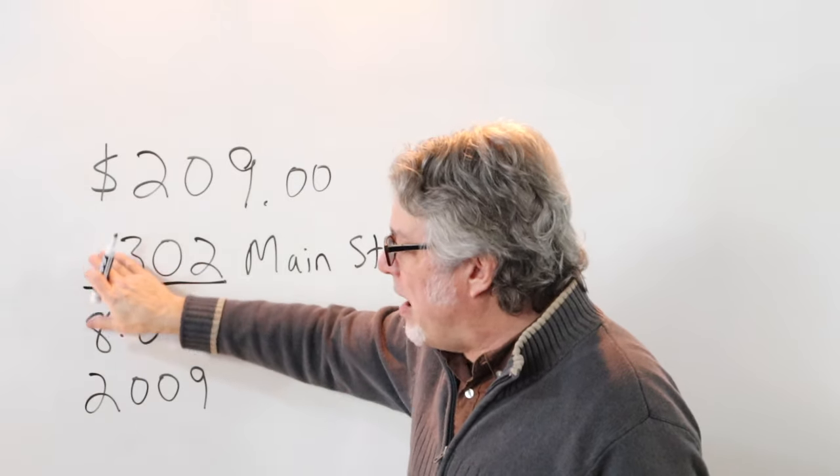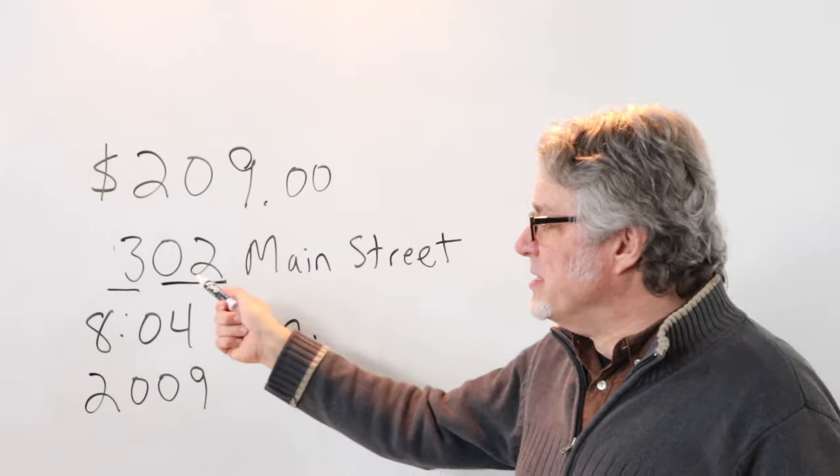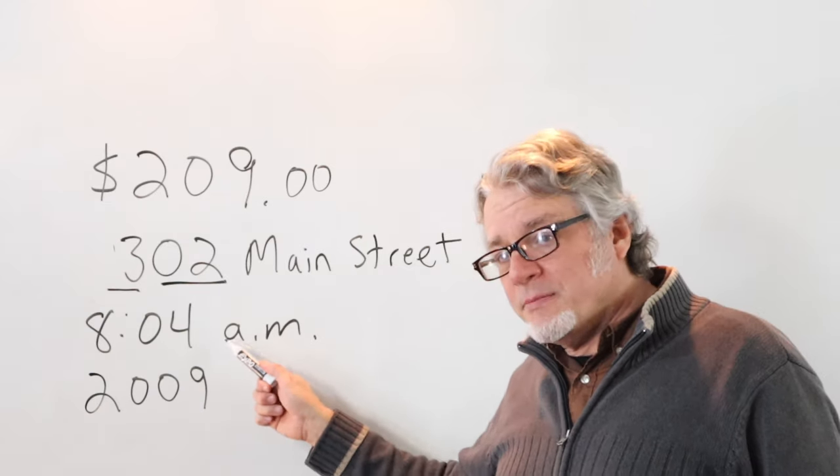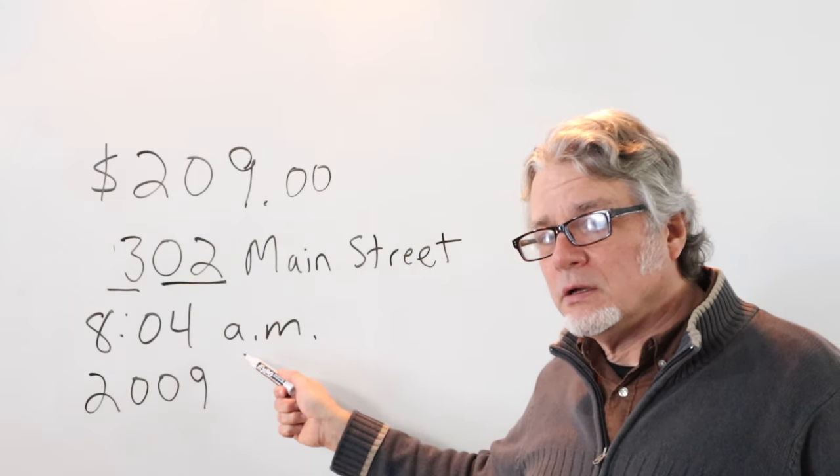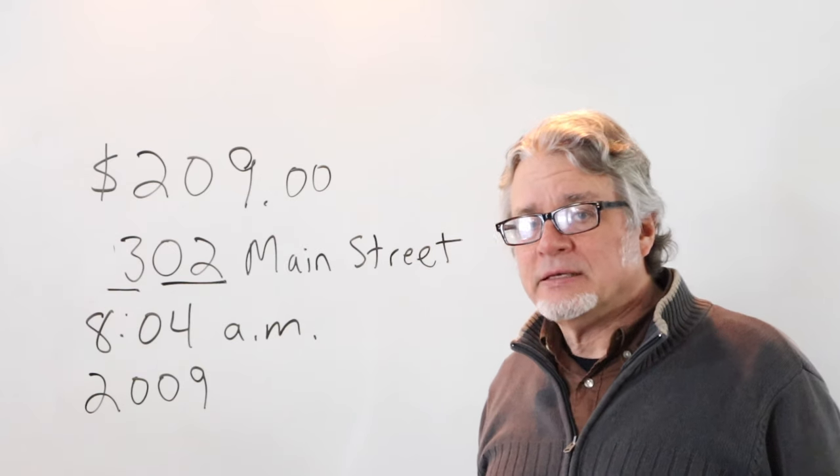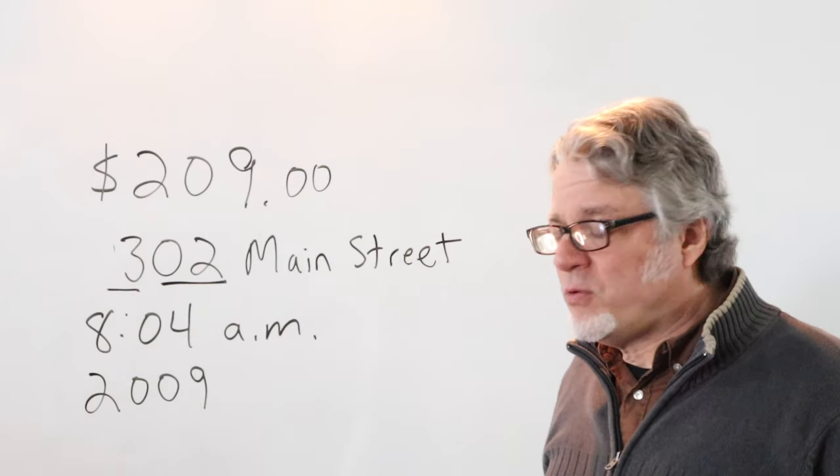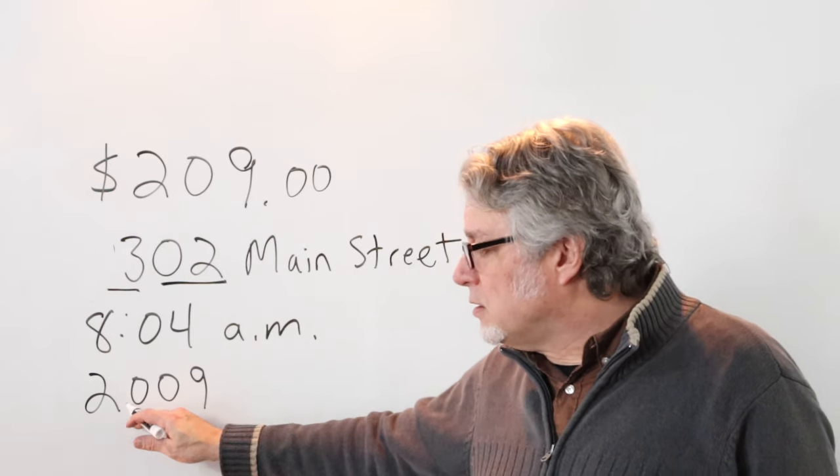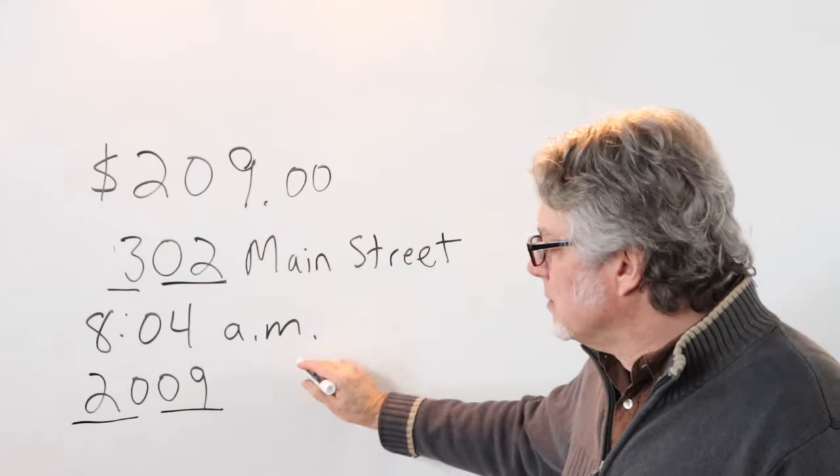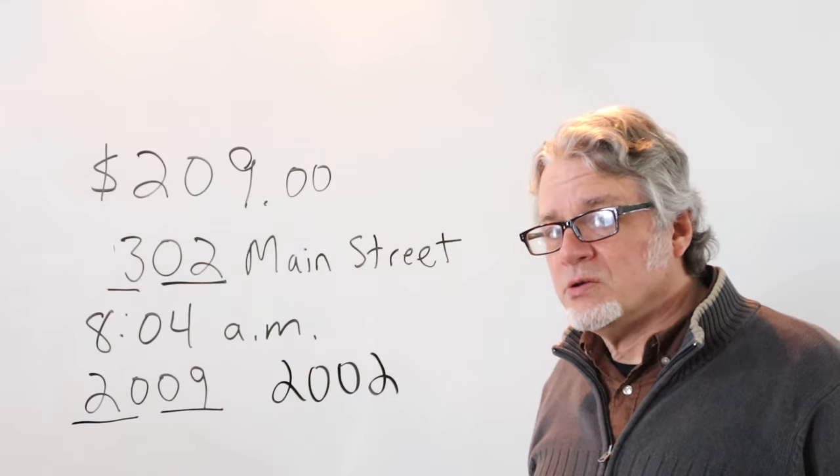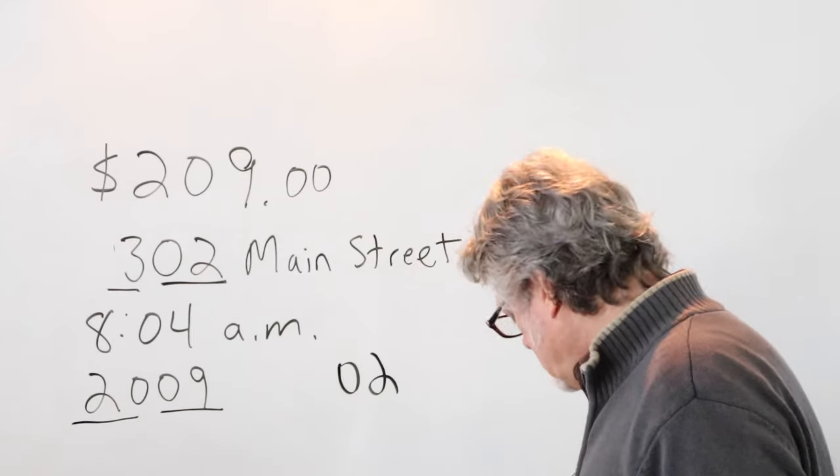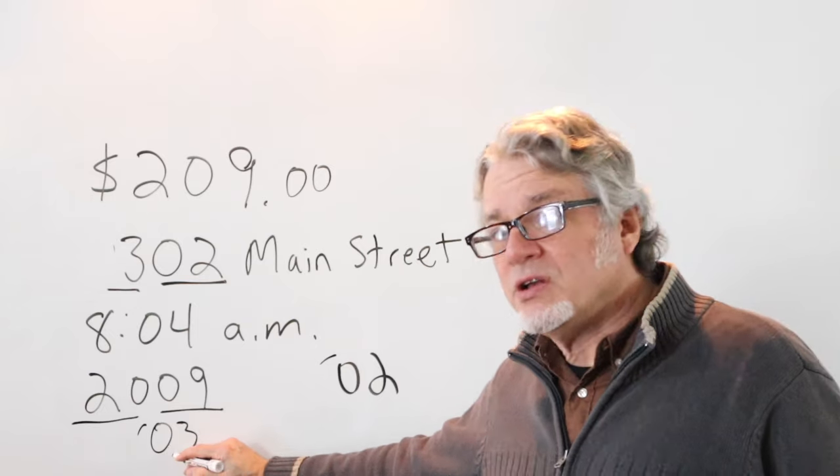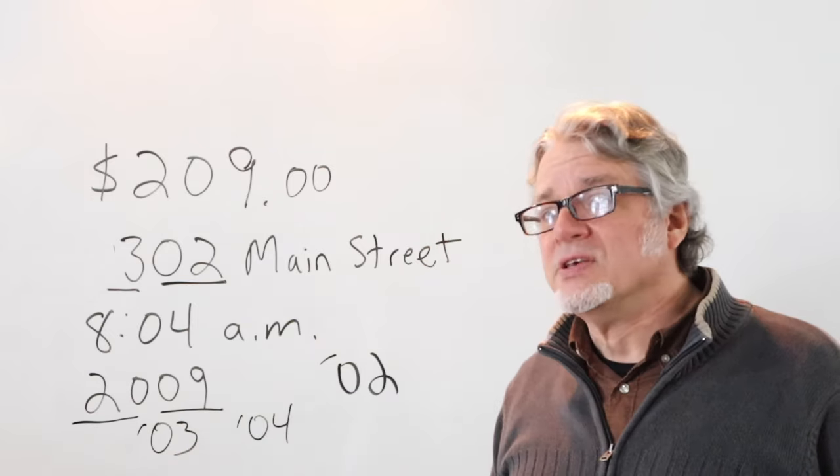If you take the seven off, and this is the address, then it reads three oh two, three oh two Main Street. Here's a time on a clock. This would be read eight oh four. You could say four minutes after eight or eight oh four. And for years, this year could be read as two thousand nine or twenty oh nine. This would be two thousand two, or drop the twenty and just say oh two. Oh three is two thousand three. Oh four is two thousand four.